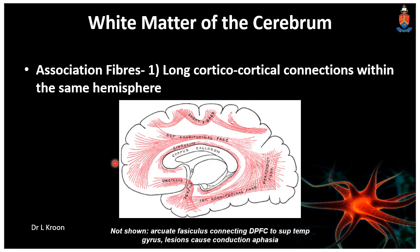Looking at the association areas, which are long cortico-cortical connections within the same hemisphere: these include the superior longitudinal fasciculus, the inferior longitudinal fasciculus, the cingulum which runs along the cingulate gyrus, as well as the uncinate fasciculus. Importantly, not shown in this diagram, is the arcuate fasciculus, which connects the dorsal prefrontal cortex with the superior temporal gyrus, and lesions in this area can be associated with conduction aphasia.